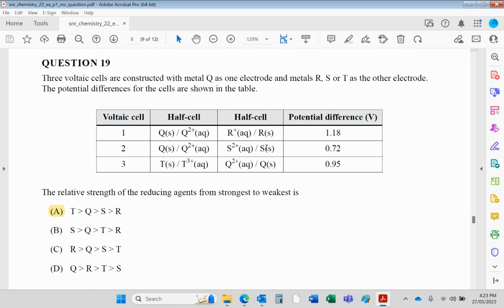Voltaic cells are constructed with metal Q as one electrode and R, S, T as the other. Now, if there is a potential difference, it means that the half cell on the left is effectively a better reducing agent than the half cell on the right. So T is a better reducing agent than Q, and then Q is clearly better than both R and S. It's much better than R, not so much better than S. So the order would be T, Q, S, R.